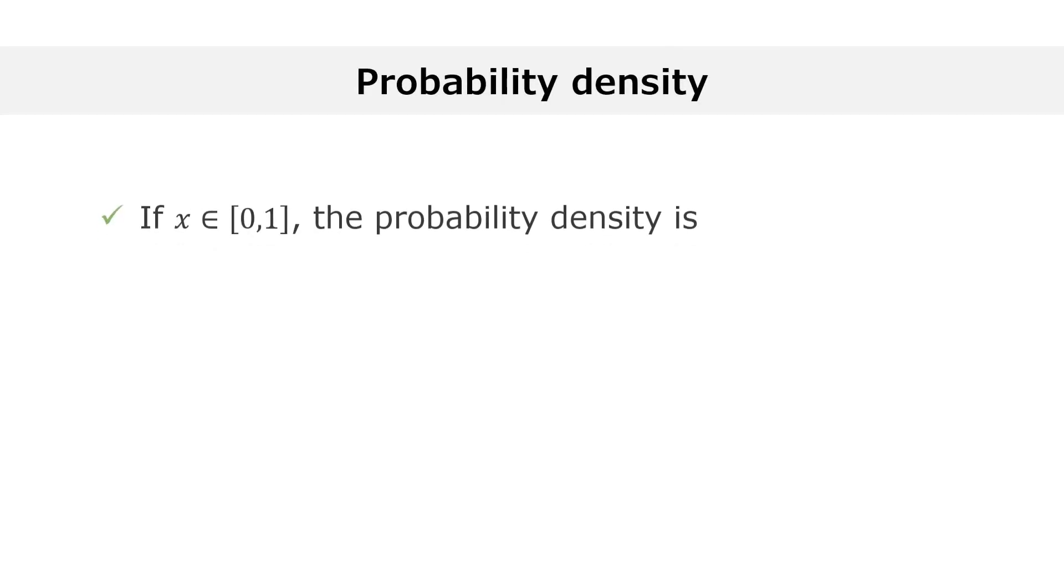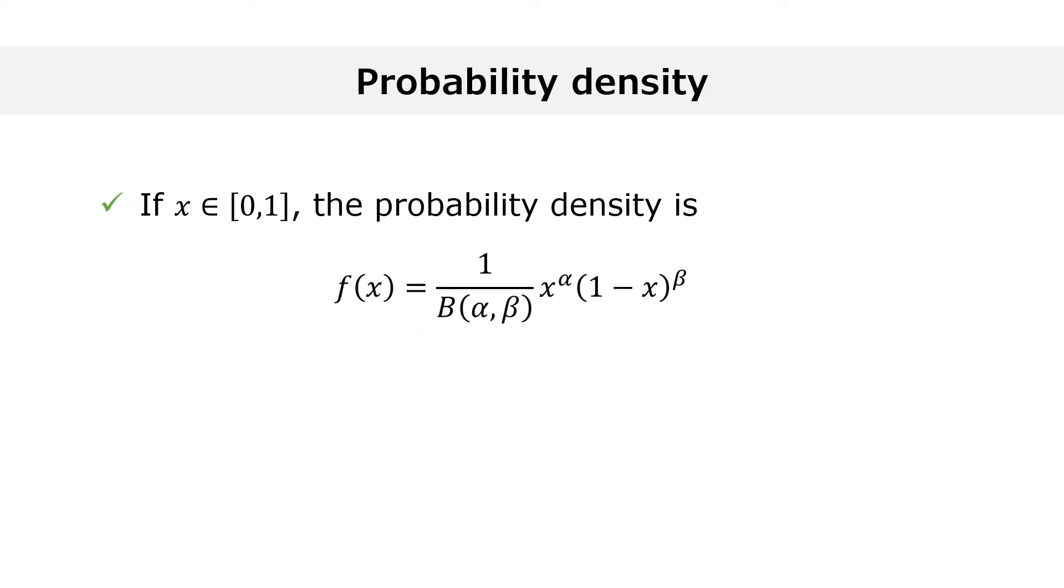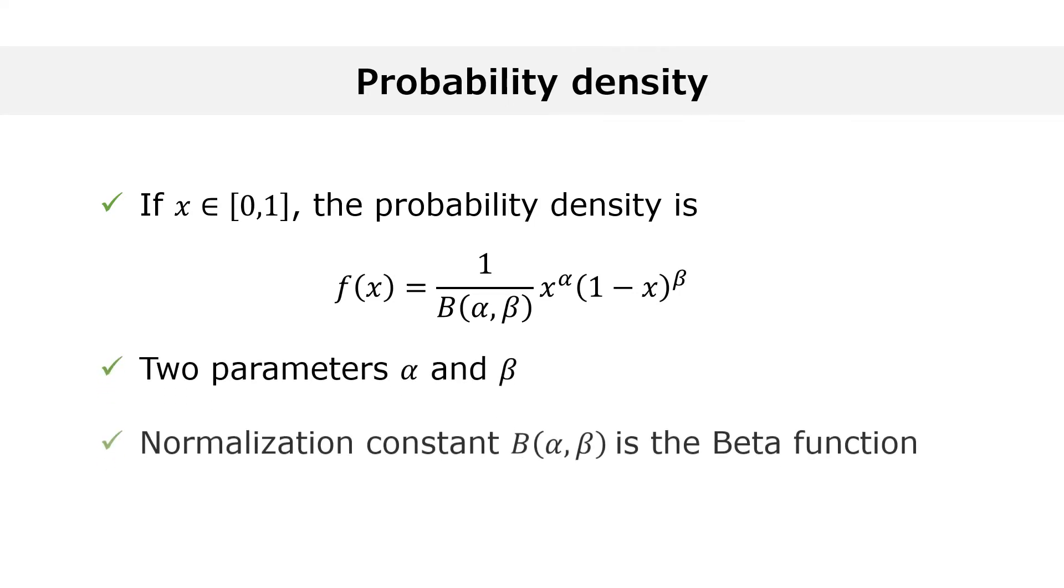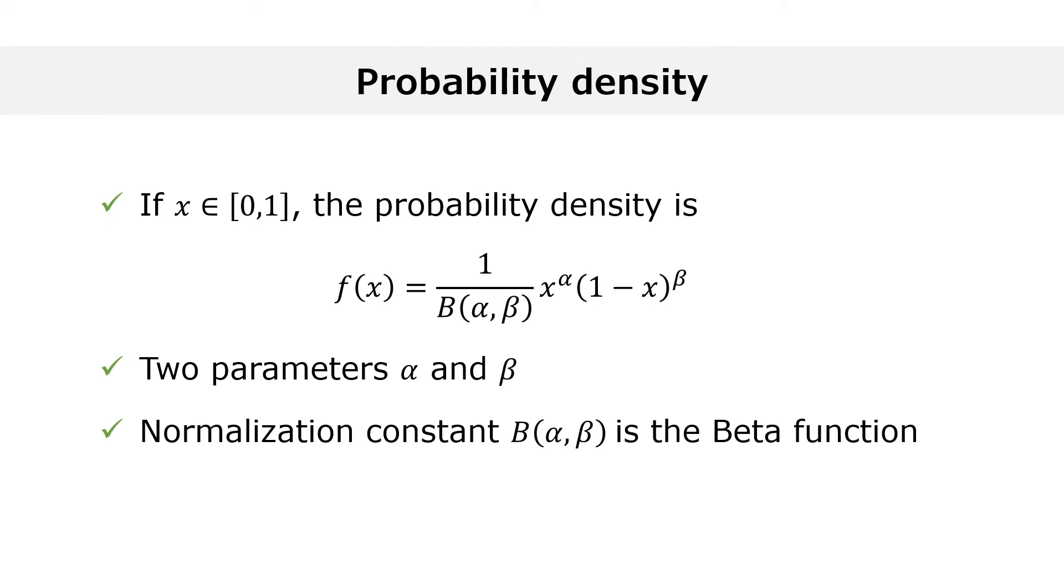The probability density function of a beta random variable has a pretty simple expression, displayed on this slide. It has two parameters, alpha and beta. The normalization constant involves the so-called beta function, a function of two variables that is often found in probability theory and mathematical statistics.